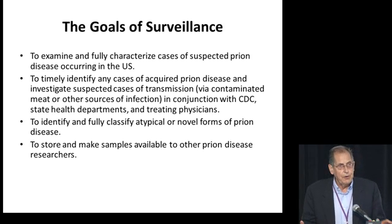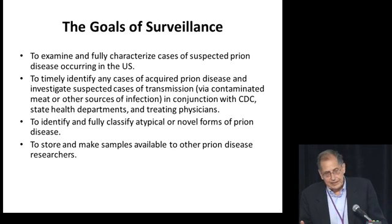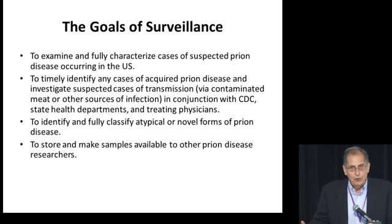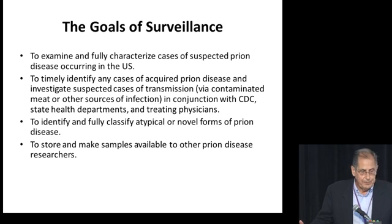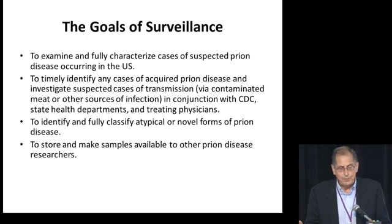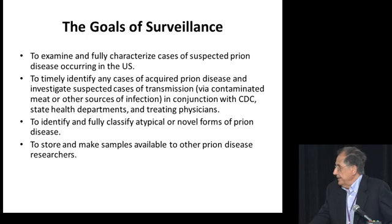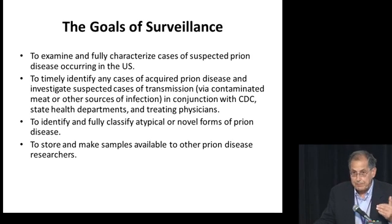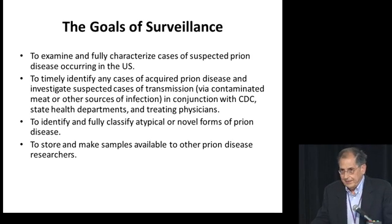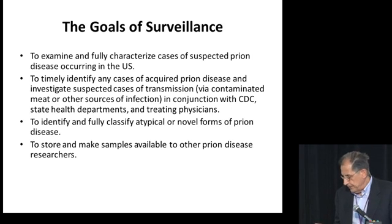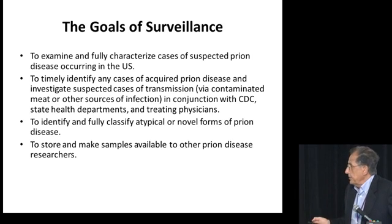We are dealing with confirmed cases, and in the great majority also characterized as for the type — whether they were sporadic or familial, and by history acquired — and also the subtypes of the cases, in the great majority, because we get frozen tissue from virtually about 90% of the cases.